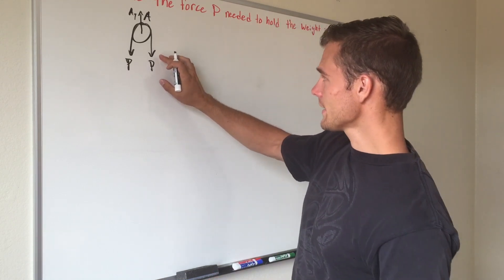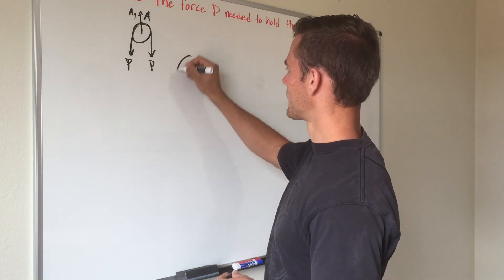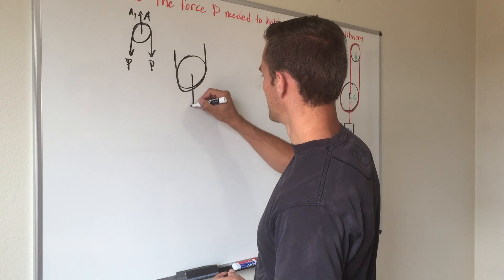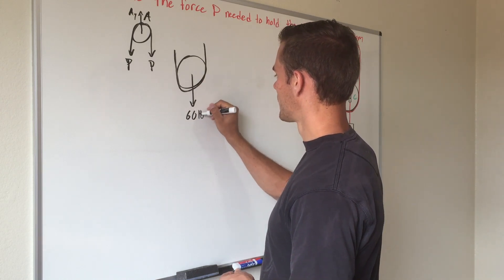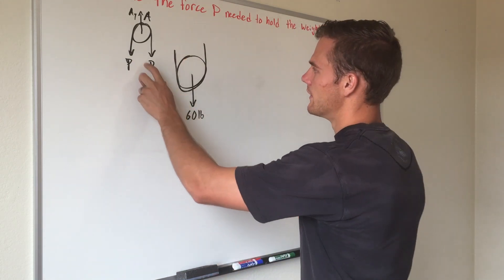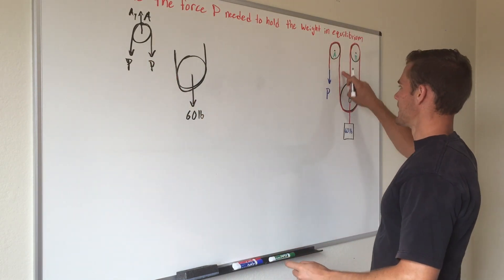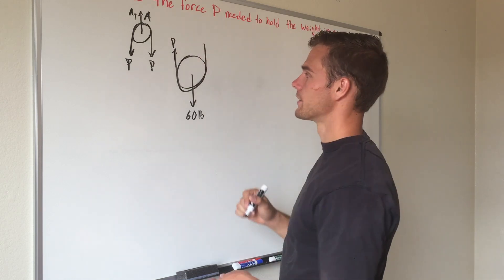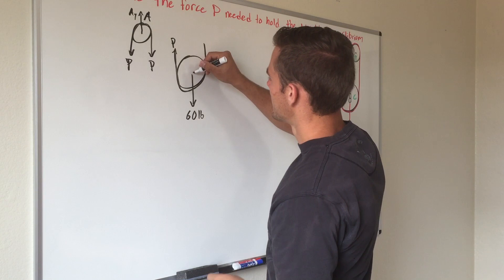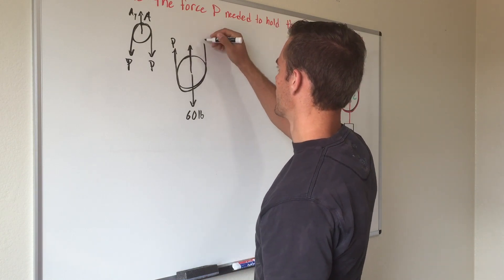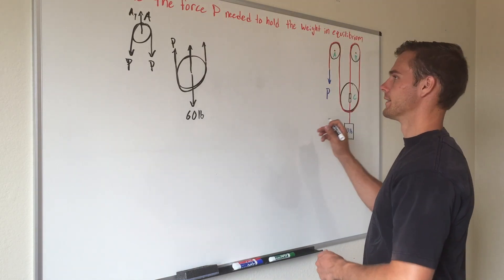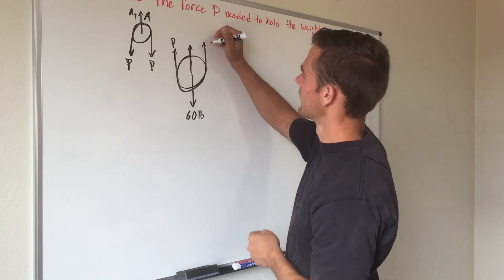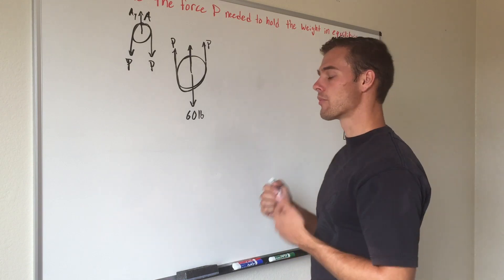Next we draw the free body diagram of pulley C, where the rope comes down and under. We have our 60-pound weight hanging down. Because this rope connects to both sides of the pulley and has the same tension throughout, the tension on one side must be opposite in direction and equal in magnitude to the other side — so both sides of the rope at pulley C are labeled P. The portion of rope going through the middle of the pulley also has to be P, since tension is constant throughout.